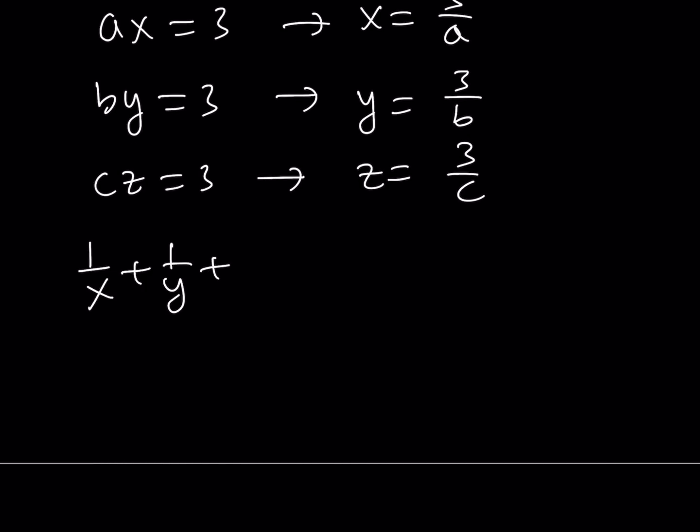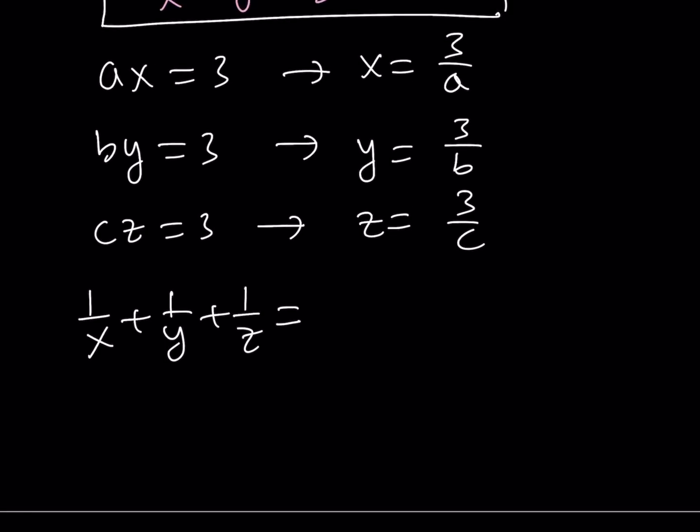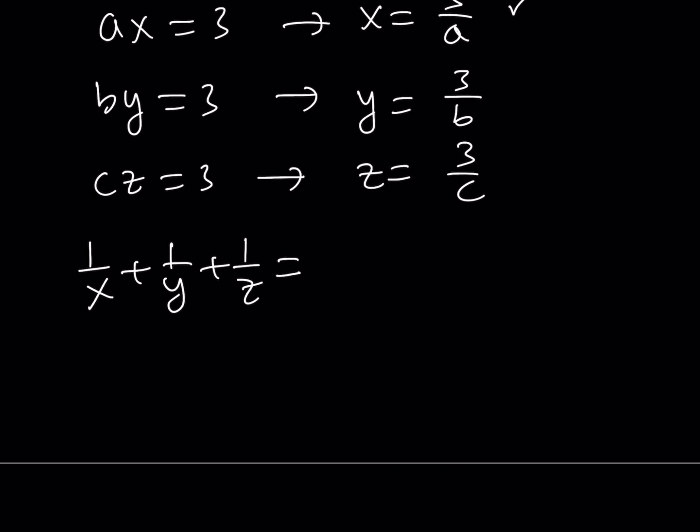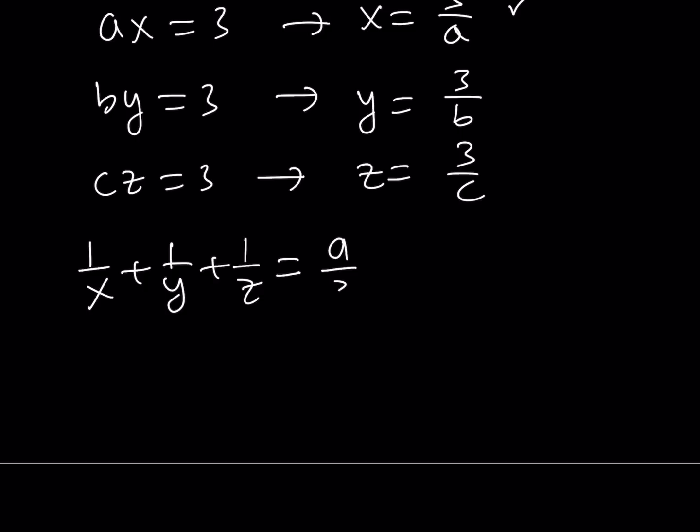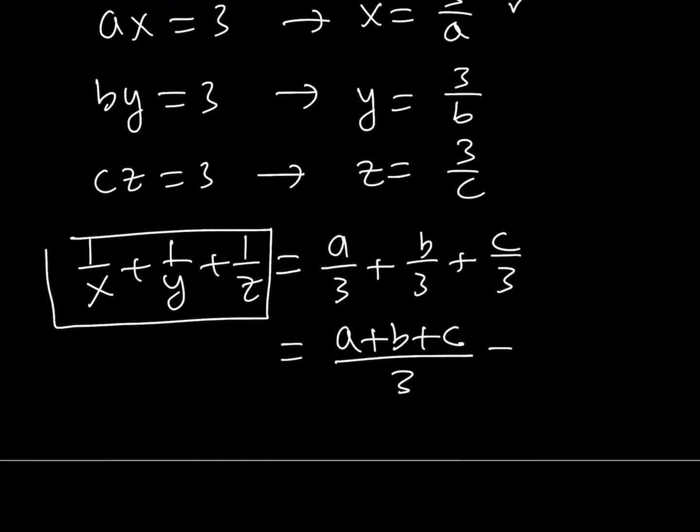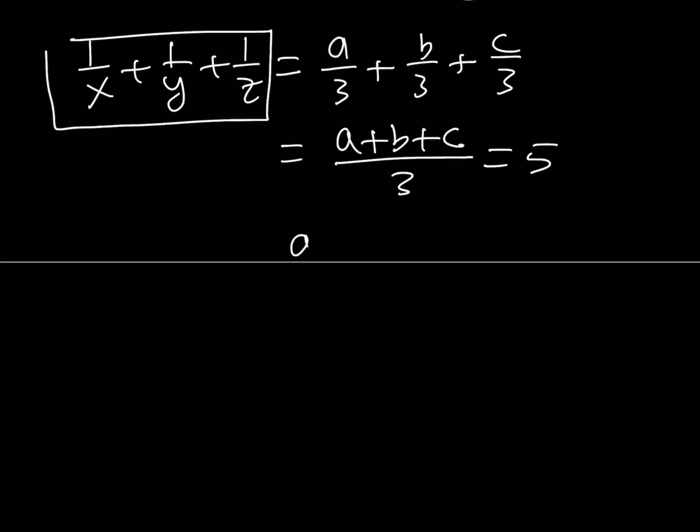Since we have XYZ, we can kind of plug it in. One over X is the reciprocal of X. And X is equal to three over A. So, the reciprocal of three over A is A over three. Reciprocal of Y is B over three. And reciprocal of Z is C over three. And this gives us A plus B plus C over three. But we do know that one over X plus one over Y plus one over Z equals five. Therefore, this equals five. And now, by using cross multiplication, we get that A plus B plus C is equal to three times five. Which is 15.